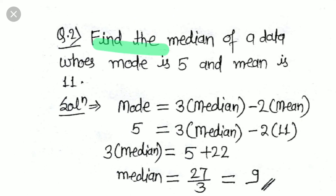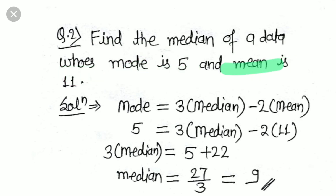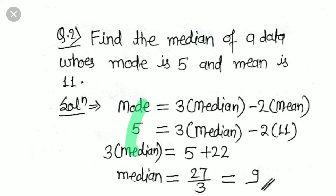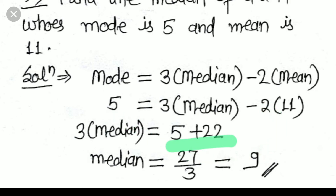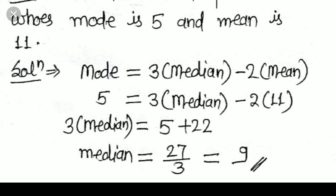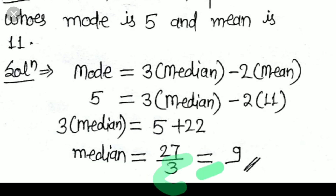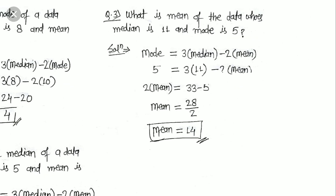Next: find the median of a data whose mode is 5 and mean is 11. Using Mode = 3 × Median − 2 × Mean: 5 = 3 × Median − 2 × 11, so 5 = 3 × Median − 22, which gives 3 × Median = 22 + 5 = 27, so Median = 27 / 3 = 9.